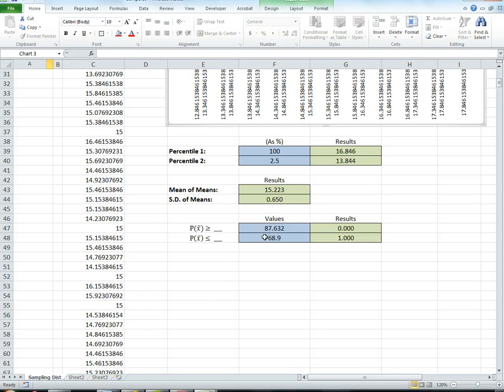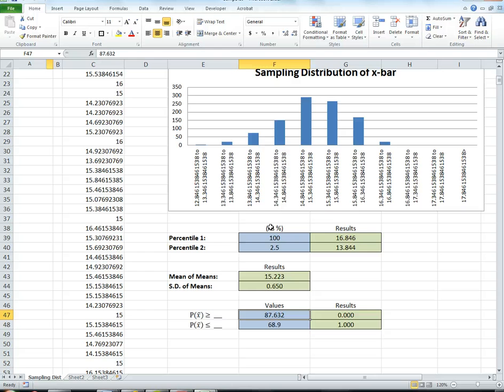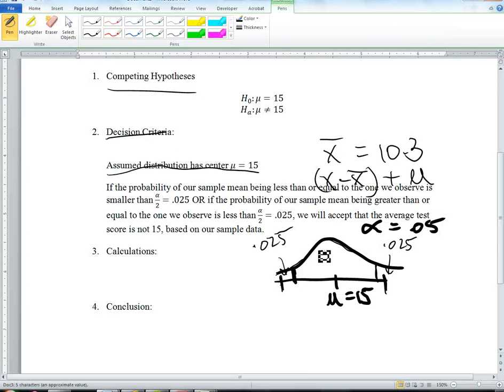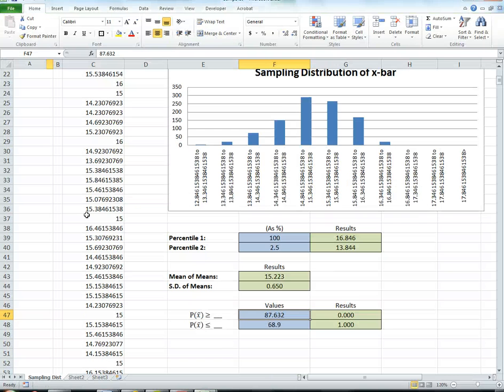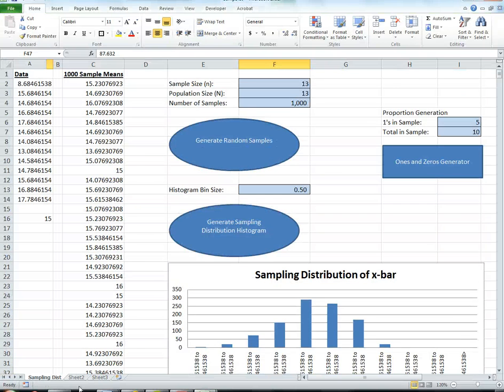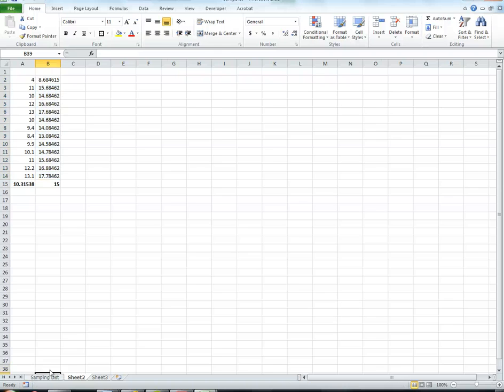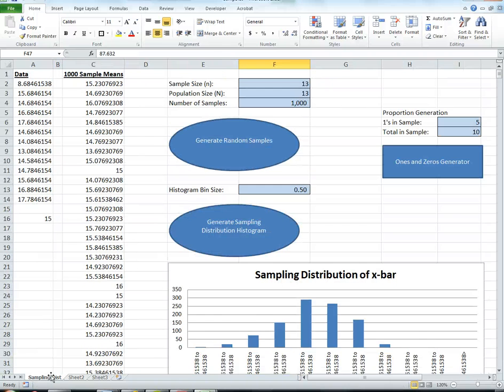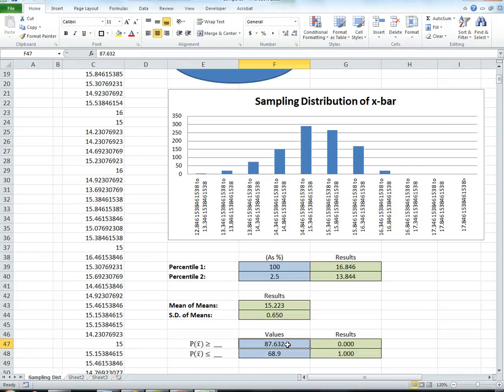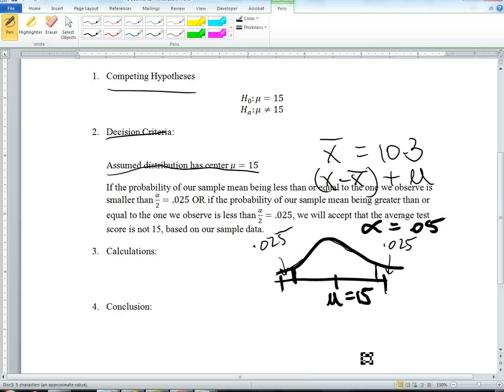Now I want to know, what's the probability of getting x's either... Well, let's see. First of all, I now see that this value is smaller than the mean. My original sample mean was 10.3. So the probability of getting something 10.3 or smaller is nearly 0%.